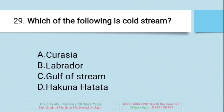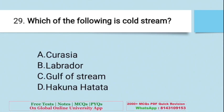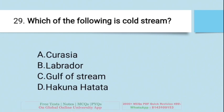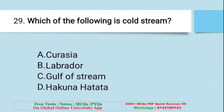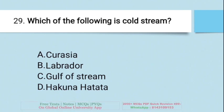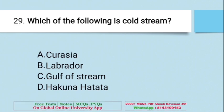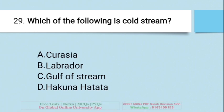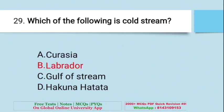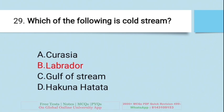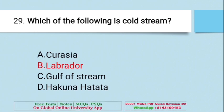Question: Which of the following is a cold stream? A. Canaria, B. Labrador, C. Gulf Stream, D. Hukana Hatata. The right answer is B — Labrador. The Labrador current is known as a cold stream.